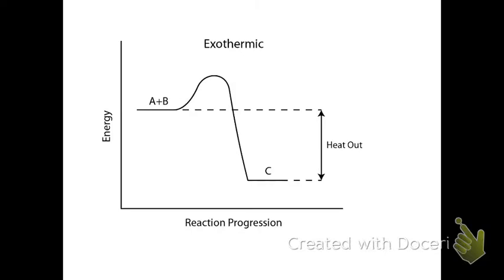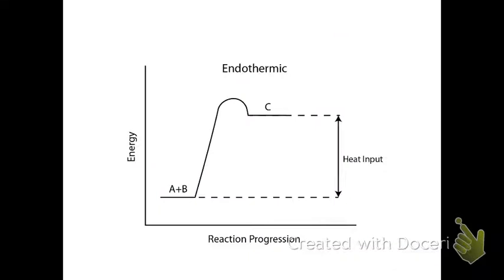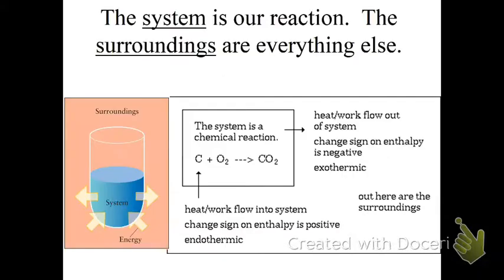And then endothermic, I absorb the heat. Energy flows into the system. Thermal energy is changed into potential energy, and your products have a higher potential energy because they absorbed it during the reaction. When we're writing it as a thermochemical equation, we write it as a reactant, and when we write it out as just delta H, it's positive. I hope that all of this is ringing a bell. There's endothermic. It's a funky-looking graph, if you ask me.